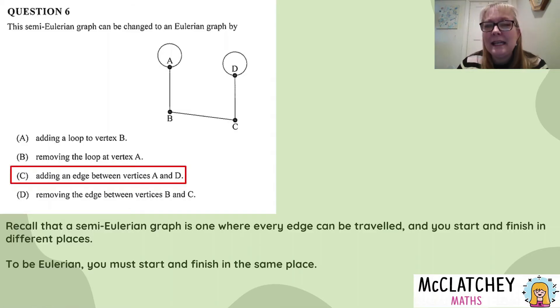But let's have a quick look at D as well, just in case. It's talking about removing an edge between B and C. If we do remove this edge here, we're going to start at A, get to B, and then we'll be stuck because we've got a disconnected network. We've got no way of bridging that gap between B and C, so it's not a viable option either.